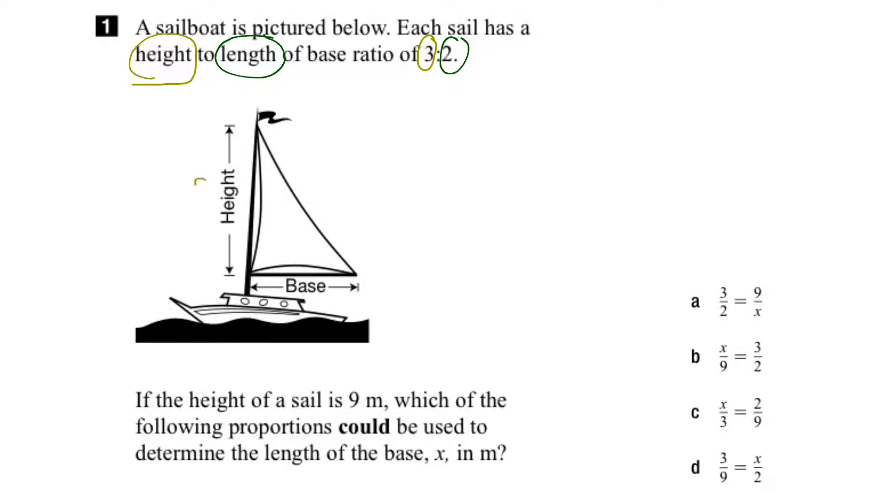So we put 3 for the height and then we put 2 for the base. Another way to write this is to say that the height is to the base as 3 is to 2. So what we've done is written the ratio here as a proportion.